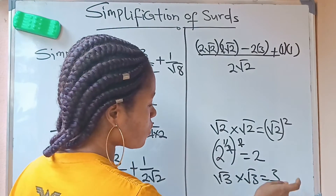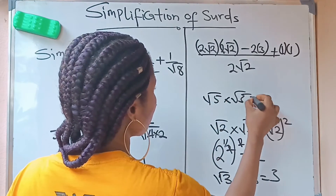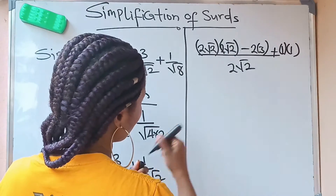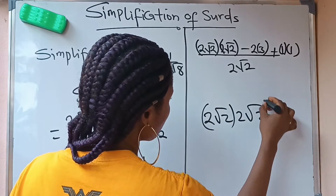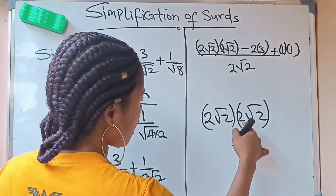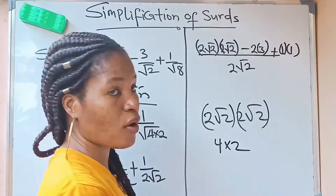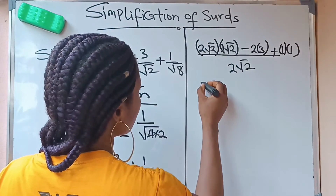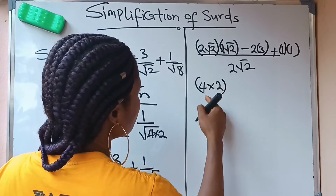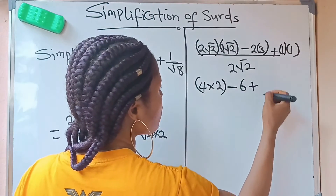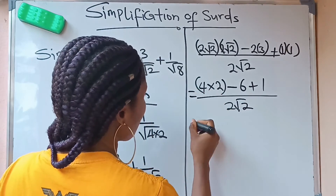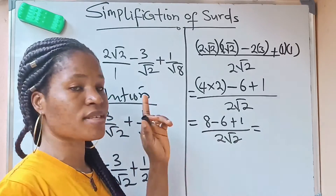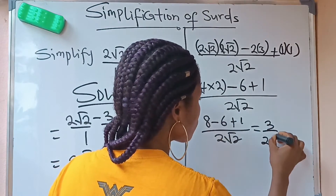Now applying this: 2 root 2 times 2 root 2 — multiply number by number, then root by root. So 2 times 2 gives 4, and root 2 times root 2 gives 2, making 4 times 2 equals 8. Then minus 2 times 3 gives 6, plus 1 times 1 gives 1. All over 2 root 2. This gives us 8 minus 6 plus 1, which is 3, all over 2 root 2.